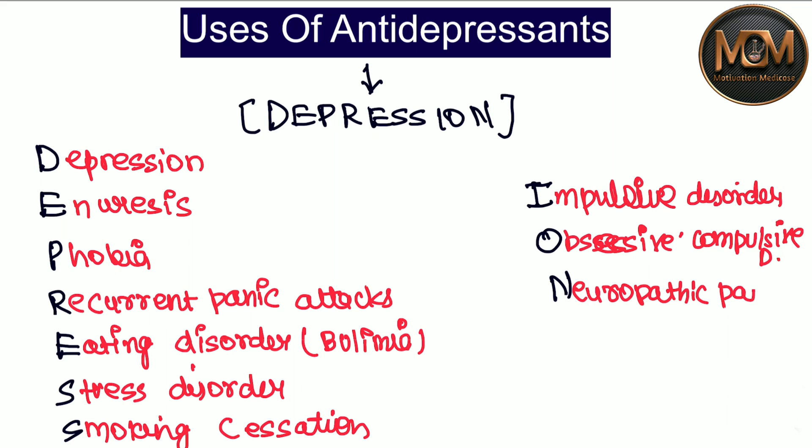So to learn the uses of antidepressants, we have the mnemonic 'depression itself' — D-E-P-R-E-S-S-I-O-N. The uses are: Depression, Enuresis, Phobia, Recurrent panic attacks, Eating disorder like bulimia, Stress disorder, Smoking cessation, Impulsive disorder, Obsessive compulsive disorder, and Neuropathic pain. As always, thanks for watching.